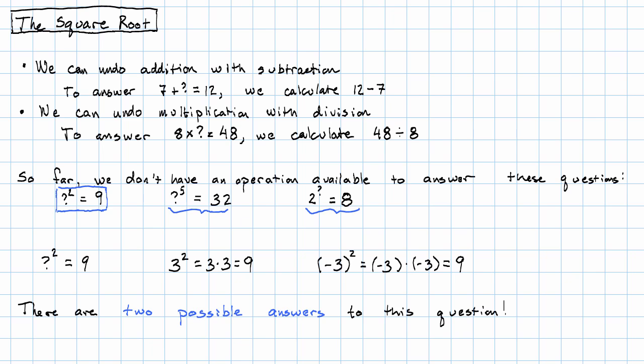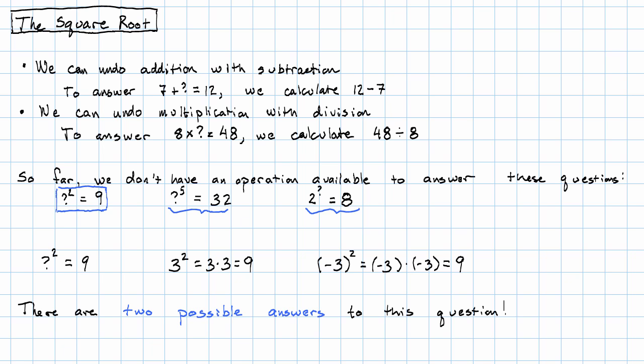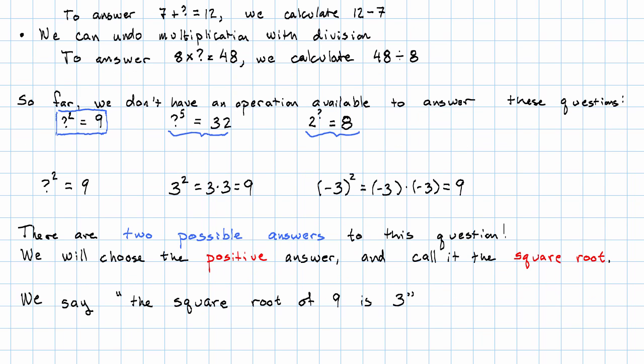Now, it won't do for an operation to give us two possible answers, right? It wouldn't do for 12 minus 7 to be 5 and another number at the same time. When we have an operation like this, we want it to give only one answer. Of the two possible answers, we choose the positive one. We say, the square root of 9 is 3.